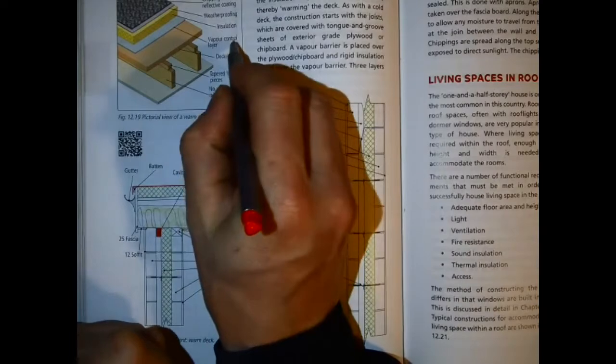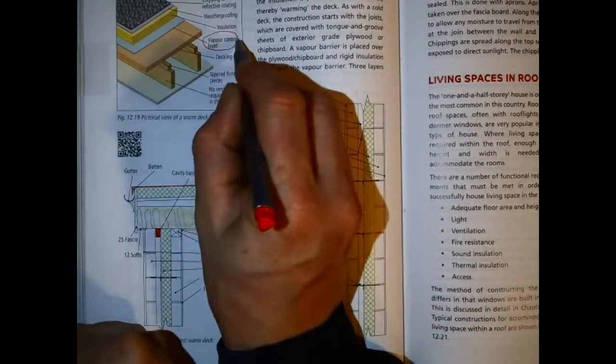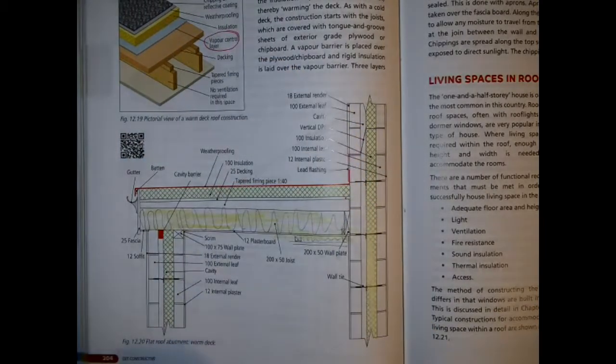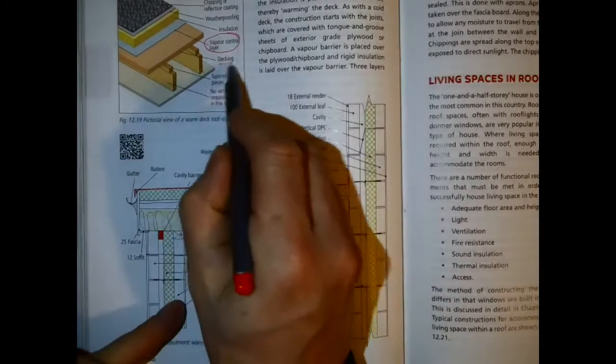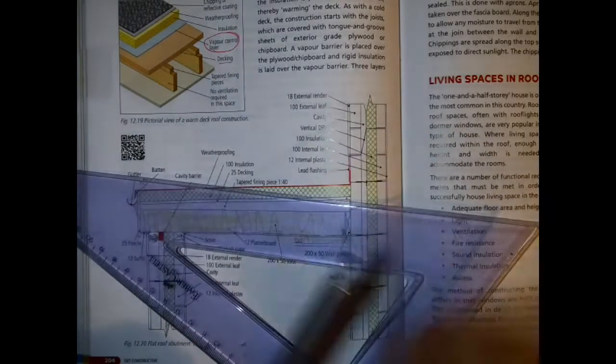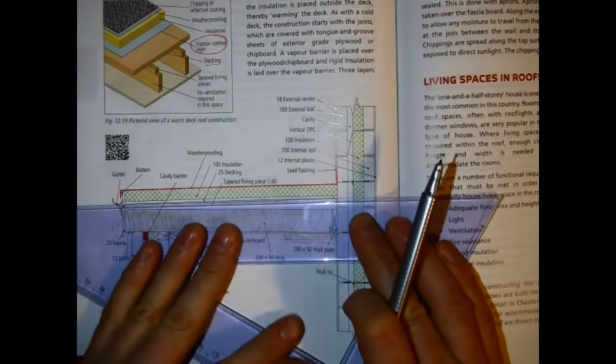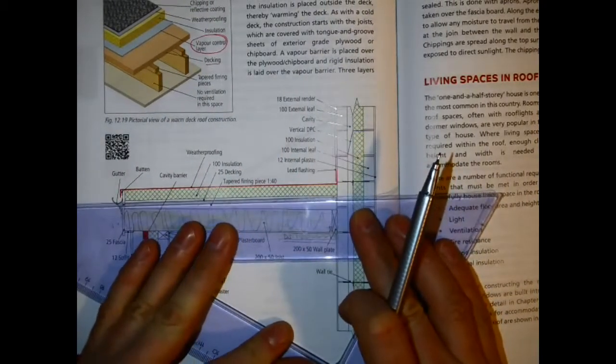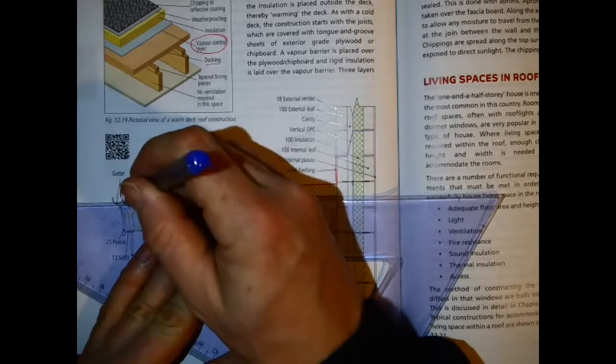We've got a vapor control layer which is placed on top of the deck before the insulation goes on. This diagram shows 25 mil decking, but it could more likely be 18 mil plywood or OSB board.